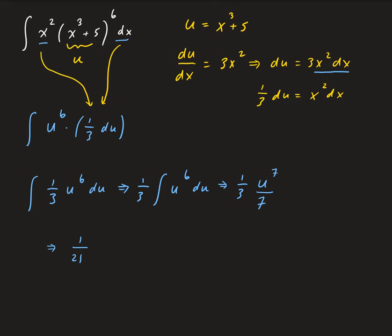So u was x cubed plus 5. We have x cubed plus 5 to the power 7 plus some constant.